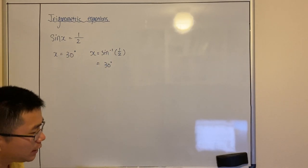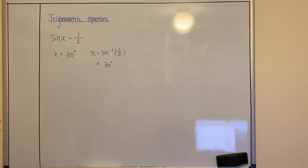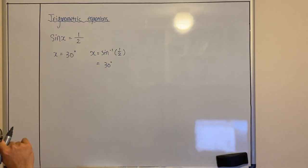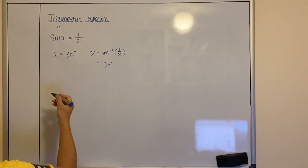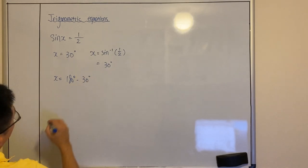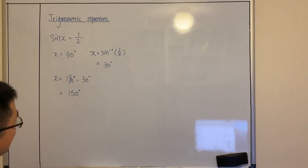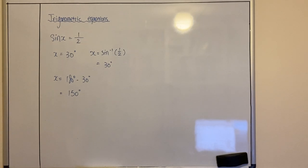Now the question is: is 30 degrees the only answer for that trigonometric equation, or do we have more answers? If you have learned All Station To Central, you should know that we do have another angle that will also give you a positive half. And that angle is x equals 180 degrees minus 30 degrees, which is 150 degrees. You can use your calculator to check whether sine of 150 equals half.